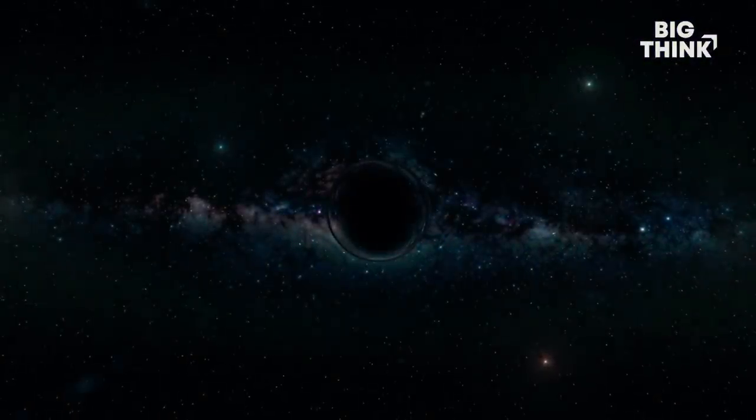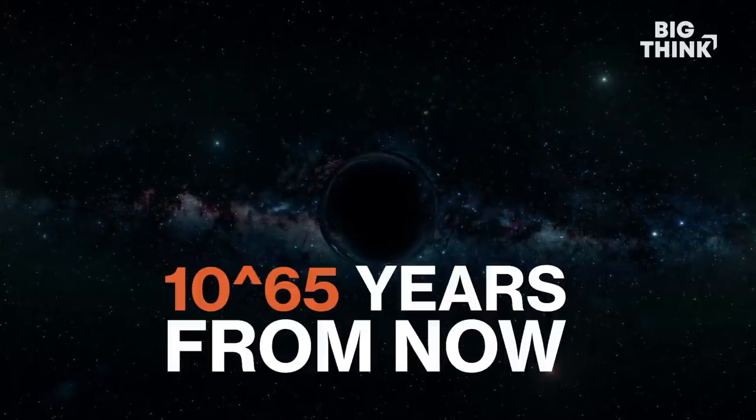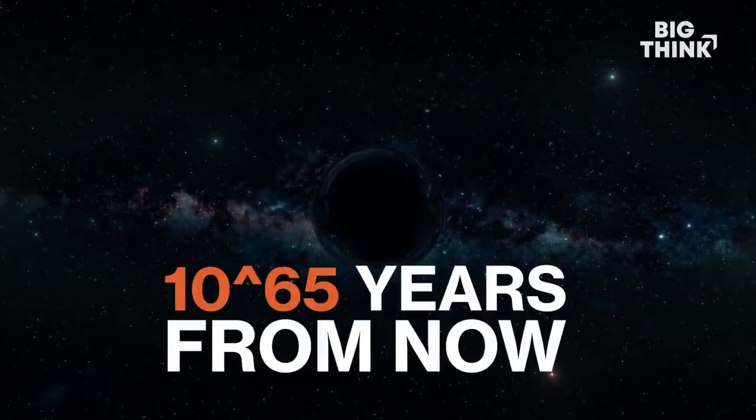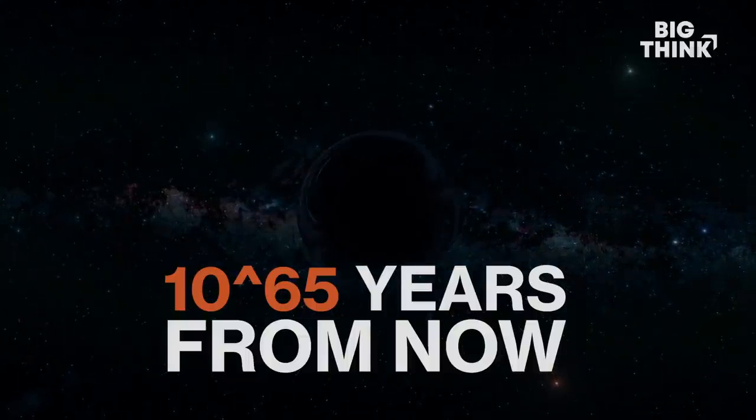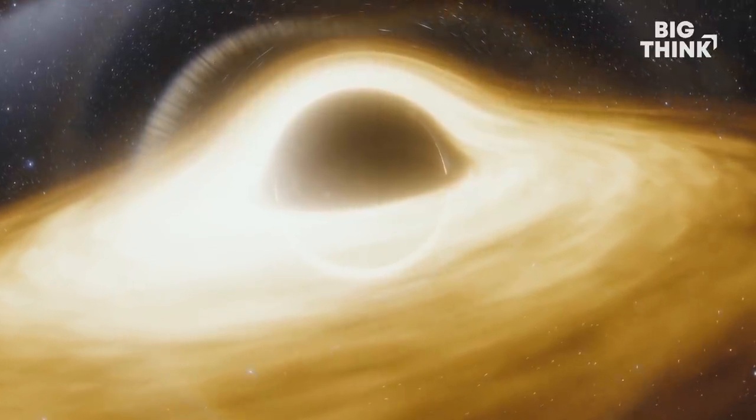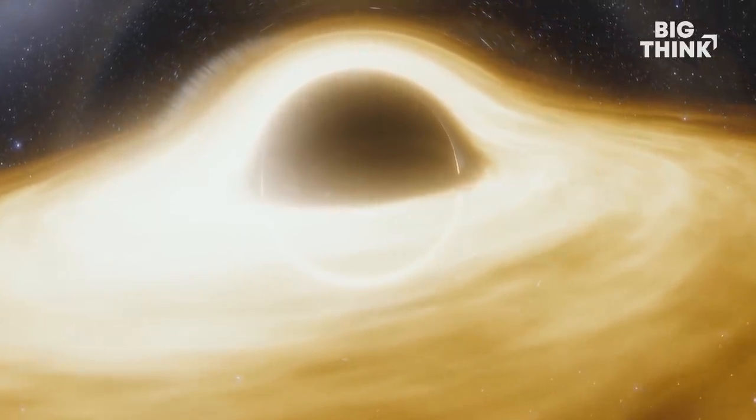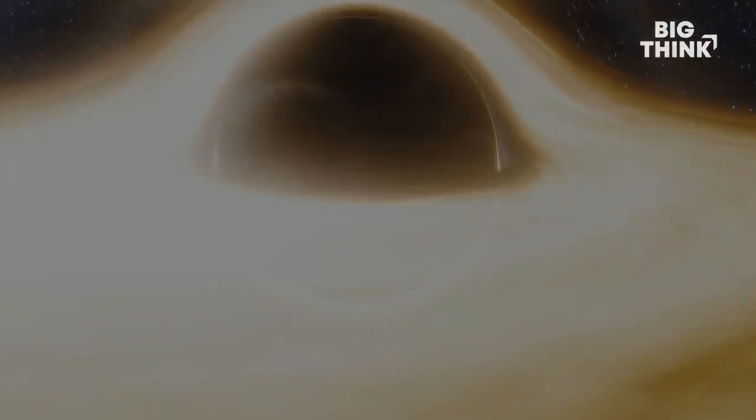If you want to talk about when the black holes are evaporating, for the smallest black holes that we know exist in the universe, then you're getting up to 10 to the power of maybe 65 years or 70 years. Somewhere in that time frame, those black holes will disappear. It's a long time after that that you get things like all of the supermassive black holes in the centers of galaxies. Those take much, much longer to evaporate. Somewhere in there, particles decay, nothing can happen anymore.